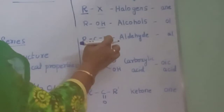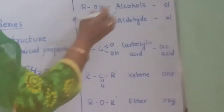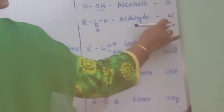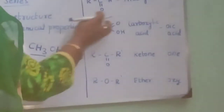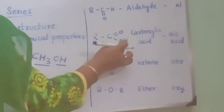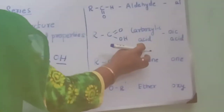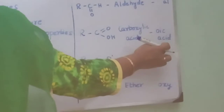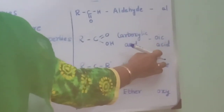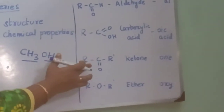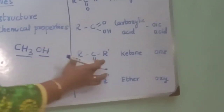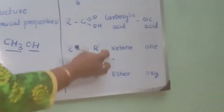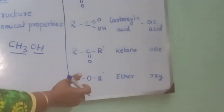If a C double-bonded O (CHO) group is attached to a hydrocarbon, the compound is called an aldehyde and the suffix will be '-al'. If the group C double-bonded O is attached between two hydrocarbon chains, we call it a ketone. The group COOH attached to a hydrocarbon is a carboxylic acid, and the name will end in '-oic acid' — for example, ethanoic acid. The group R-O-R', where R' represents a different hydrocarbon chain, is called an ether.